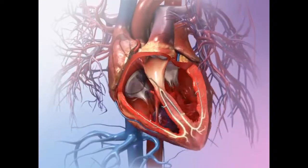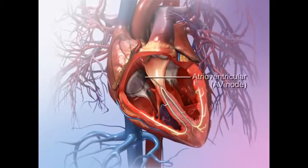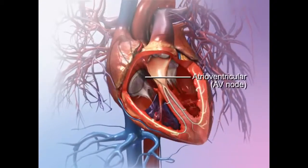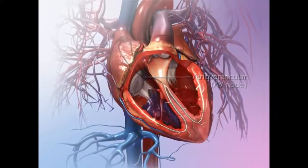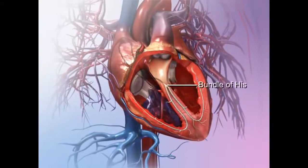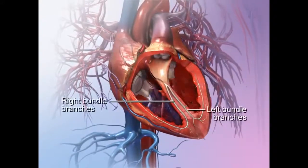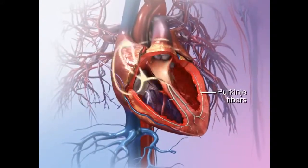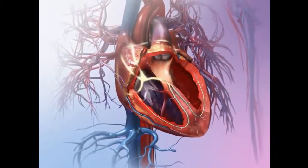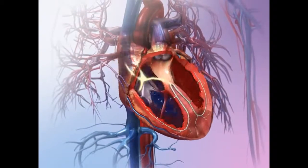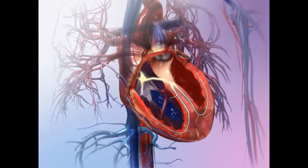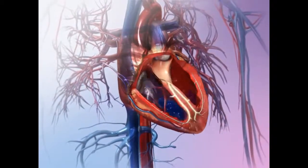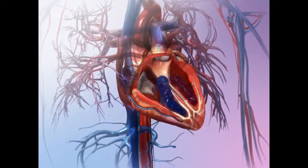Next, the impulse travels to the atrioventricular, or AV node. It passes through the bundle of His, the bundle branches, and the Purkinje fibers. As the impulse reaches the ventricles, it triggers a contraction there, and the heart ejects blood.